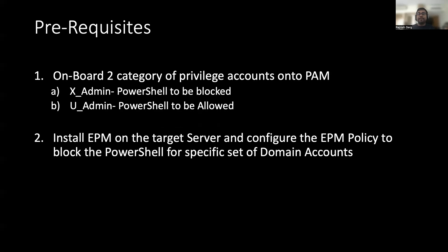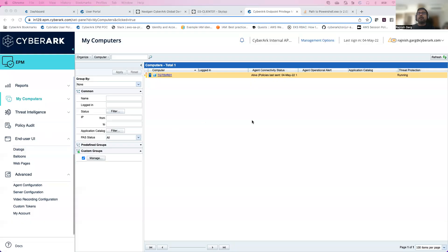For this demonstration there are two main prerequisites. First, I have onboarded two different categories of privilege accounts: x_admin, for which we want to block PowerShell use, and u_admin, for which PowerShell access should be allowed. To achieve this entire use case, we need to install the EPM agent on the target server and configure a policy to allow or block PowerShell for specific domain accounts.